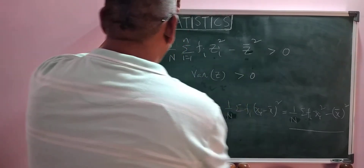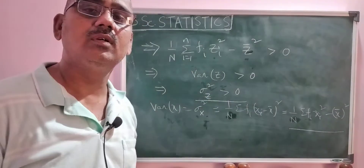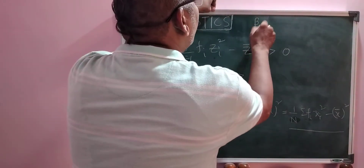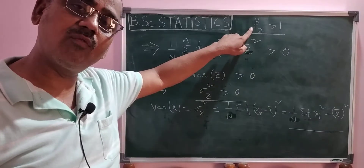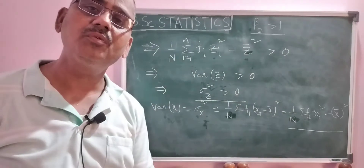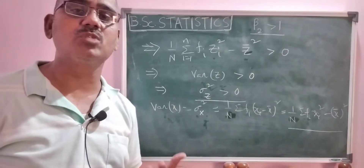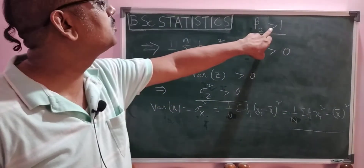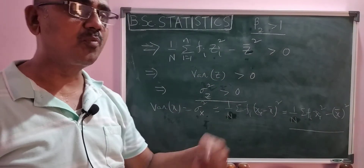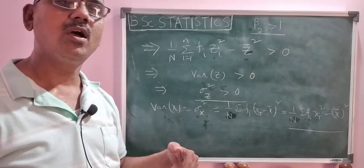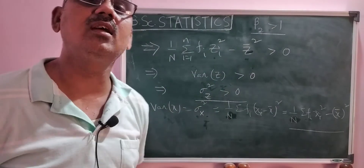So sigma square of z is greater than 0. Since sigma square z is always greater than 0 — because the variance of any variable is always positive or non-negative — therefore beta 2 greater than 1 is always true. We have proved this result: we considered beta 2 is greater than 1 and derived that sigma square z is greater than 0, which is always true. Therefore, for a discrete distribution, beta 2 is always greater than 1. Thank you.